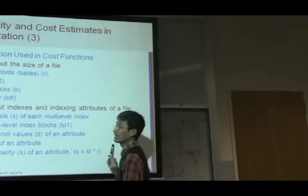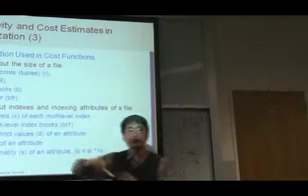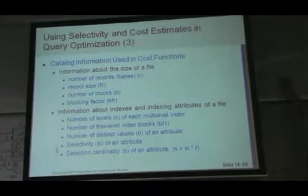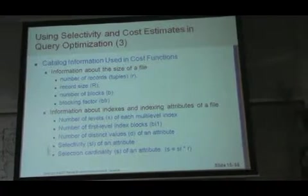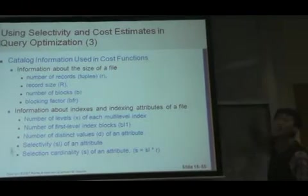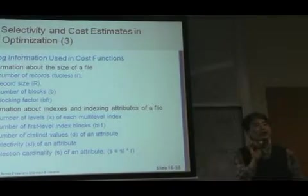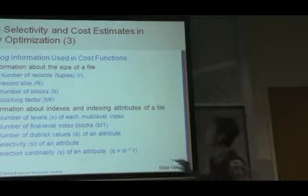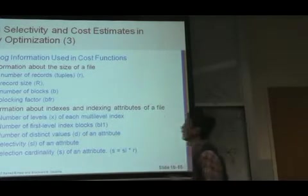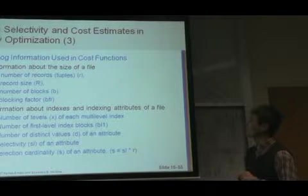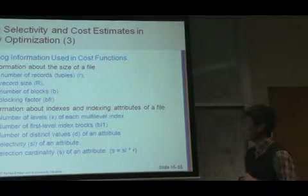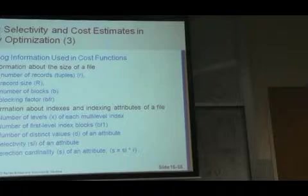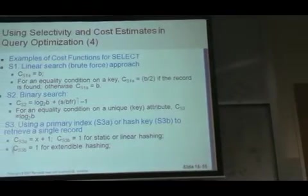And also indexing in the indexing structure, number of level. Can you remember? B-tree index, B+ tree index. It's like the, this is the root node and leaf node, one, two, three level. Because that determines number of IO as we have seen before. One, two, three, then data. So X is the number of level. And number of first level index block. And number of distinct value and selectivity and the cardinality rule will discuss more about such a notation in the next class.